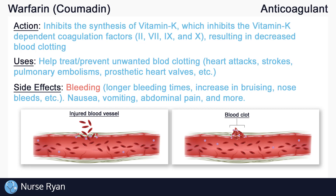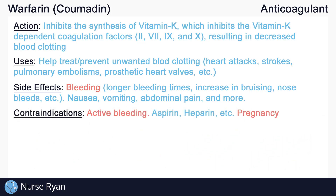There are many other possible side effects of warfarin, just some of which include nausea, vomiting, and abdominal pain. Due to the fact that warfarin slows down clotting and increases bleeding, warfarin is contraindicated in someone who is actively bleeding, whether internal or external. Warfarin is also contraindicated in those who are taking other medications that may cause bleeding, such as aspirin or heparin, and those with some types of blood disorders.